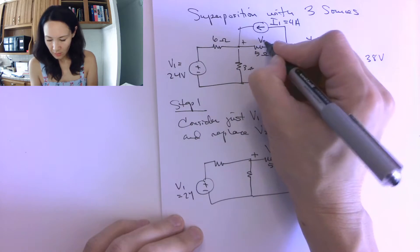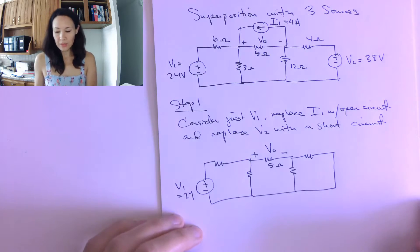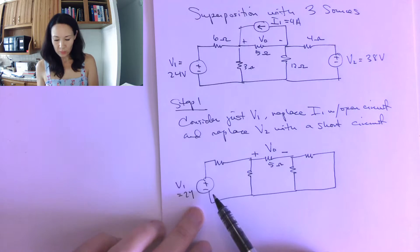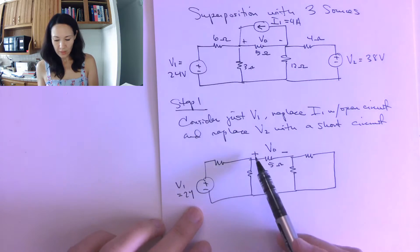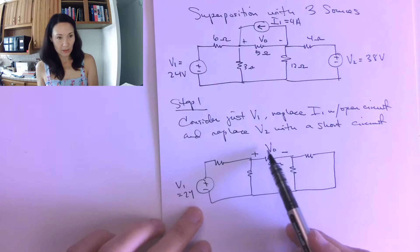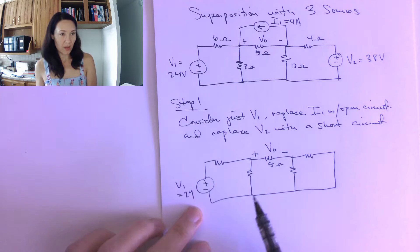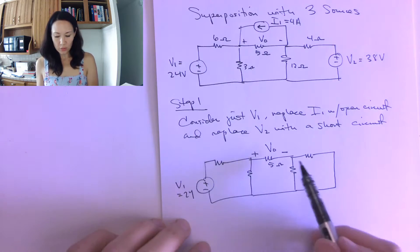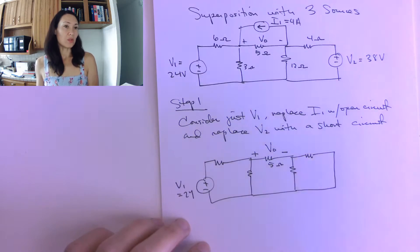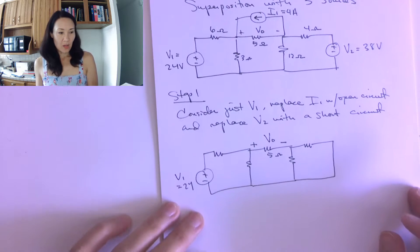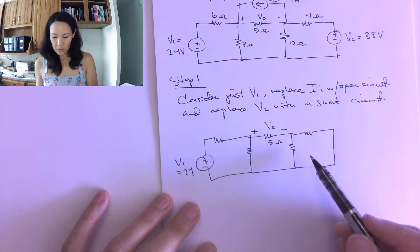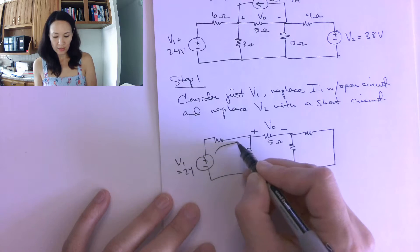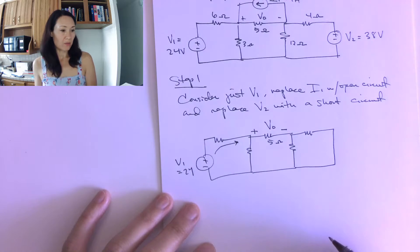We want to solve this for each source one at a time. So we want to solve this circuit and figure out what Vout is — the voltage drop across the 5 ohm resistor. This will be V1's contribution to Vout, and then we'll do that for the other sources. The first thing we should do is find the equivalent resistance so we know how much current is produced by V1.